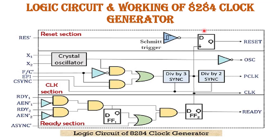Now the logic circuit and working of the 8284 clock generator. This is the logic diagram of the 8284 clock generator. It generates important signals such as reset signal, oscillator signal, peripheral clock signal, clock signal, and ready signal for the 8086 or 8088 microprocessor or other peripheral devices. The logic diagram is divided into three sections: the reset section, the clock section, and the ready section.